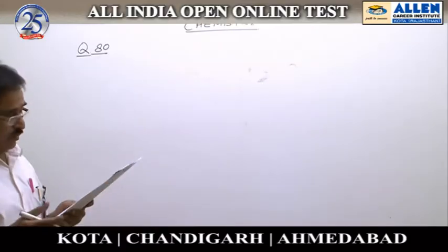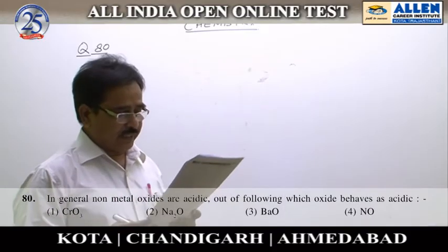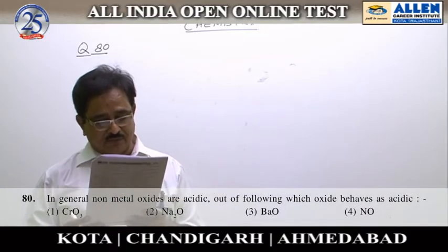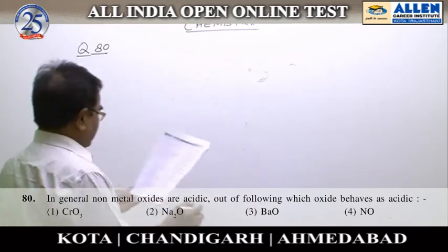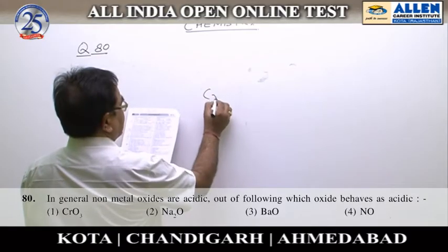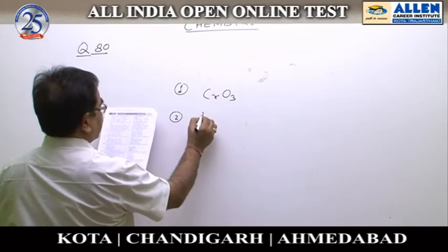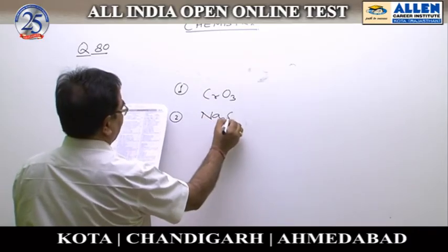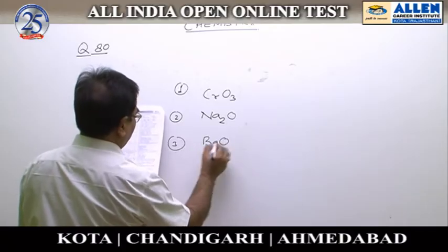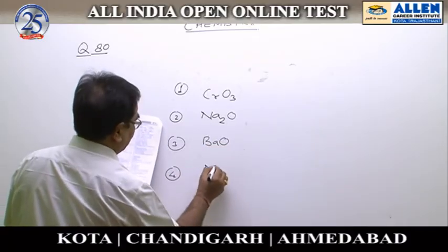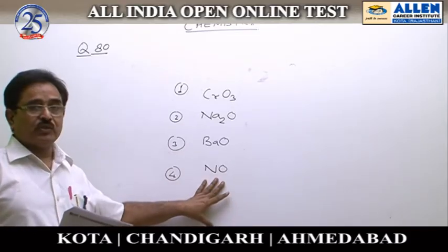Question number 80: In general, non-metal oxides are acidic. Out of the following, which oxide behaves as an acid? The options are: CrO3, Na2O, BaO, and NO (nitric oxide). Nitric oxide acts as a neutral or inert oxide.